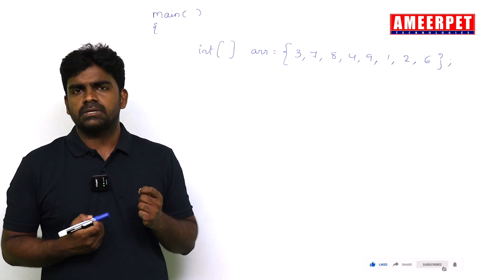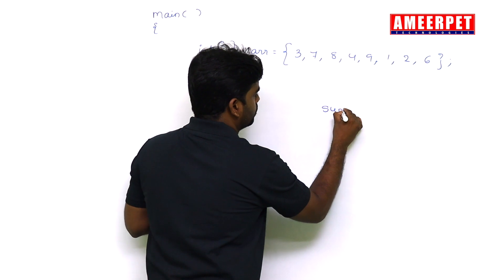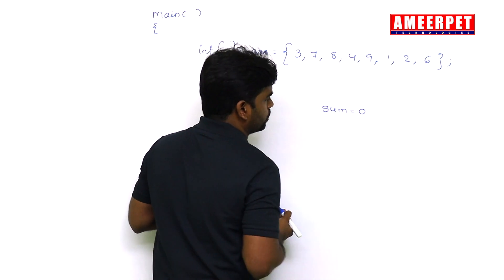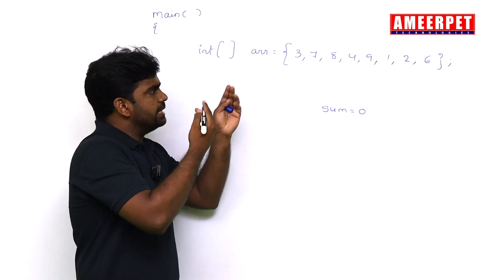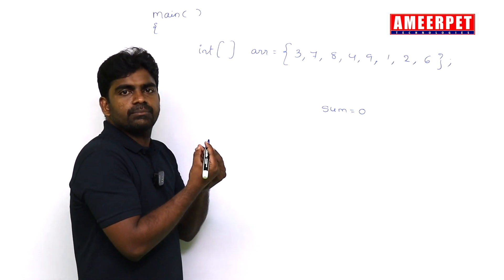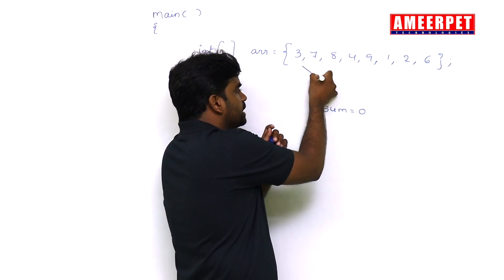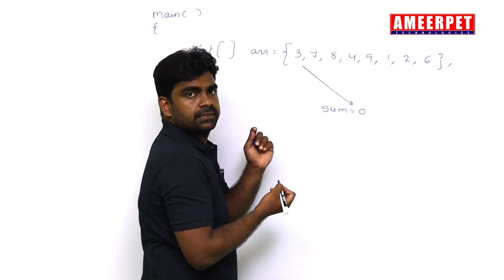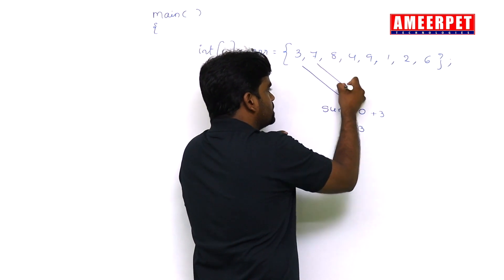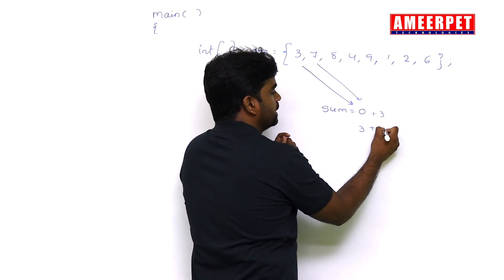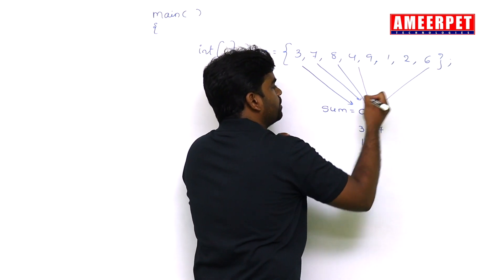Now we are going to find the sum. It's very simple. First, you take one variable sum with the value zero. We are just initializing the sum value to zero. Now each element we are taking from the array and we are adding to the sum. So repeat the loop from first index to last index. The first element adding to sum, value becomes 3. Next becomes 7, adding value becomes 10, and like that you keep adding all elements from the array.